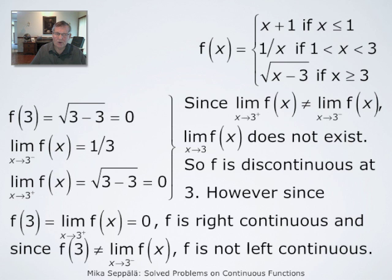At x = 3: f(3) = √(3 − 3) = 0. The left-hand limit of f at x = 3 is the limit of 1/x as x → 3 from the left, which is 1/3. The right-hand limit is the limit of √(x − 3) as x → 3 from the right, which is 0. These one-sided limits exist but are different numbers; therefore f does not have a limit at x = 3, and it is neither right nor left continuous at that point.